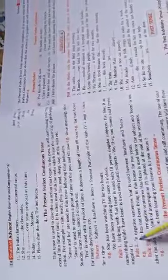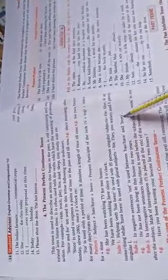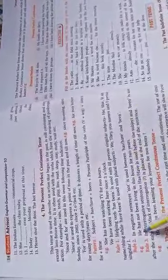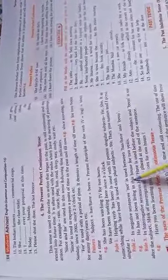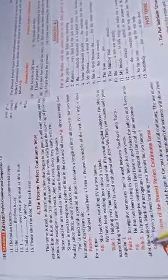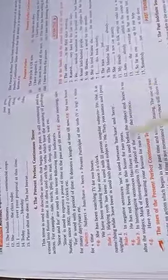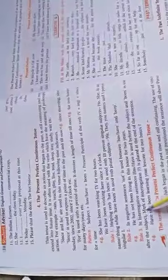Rule number two: in a negative sentence, 'not' is used between 'has/have' and 'been'. Example: He has not been living in this house for two years. Rule number three: in interrogative sentences, 'has/have' is used before the subject, and 'been' is used after the subject.